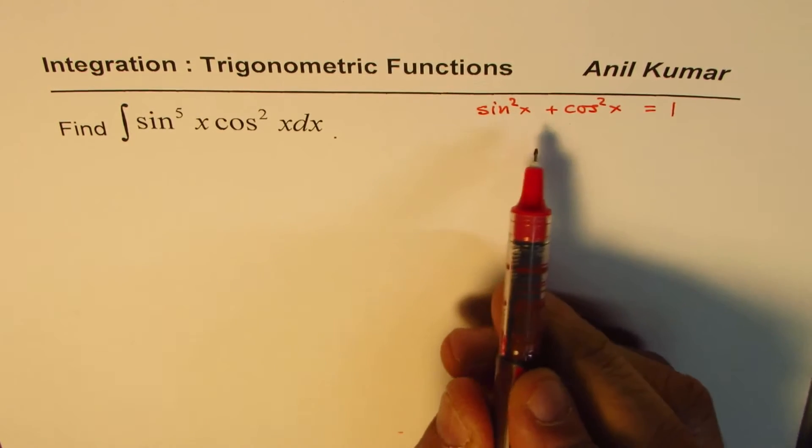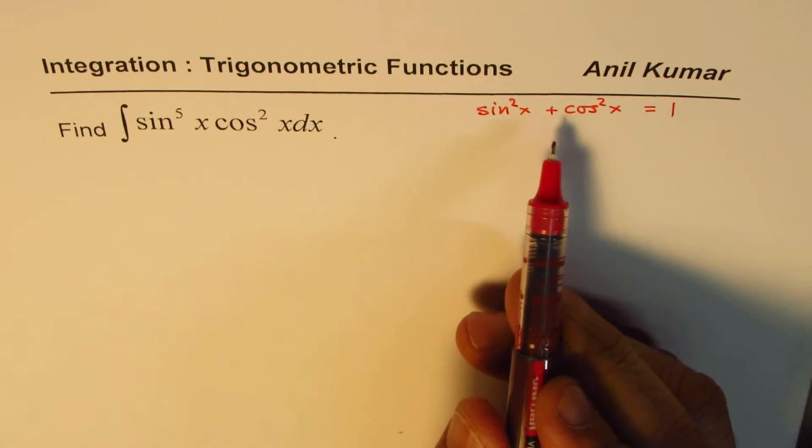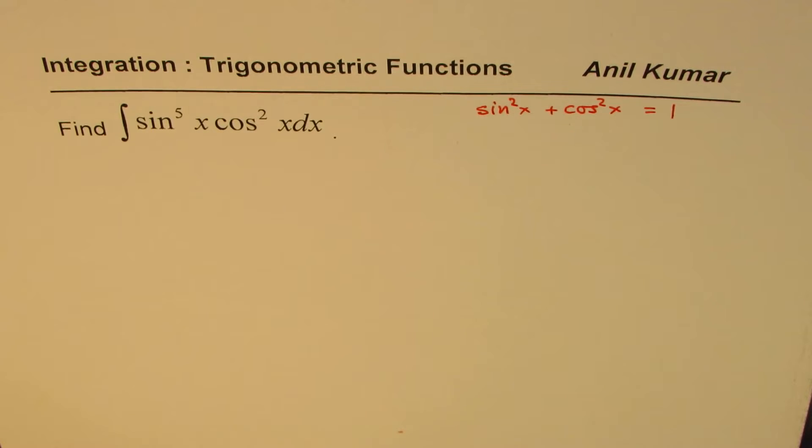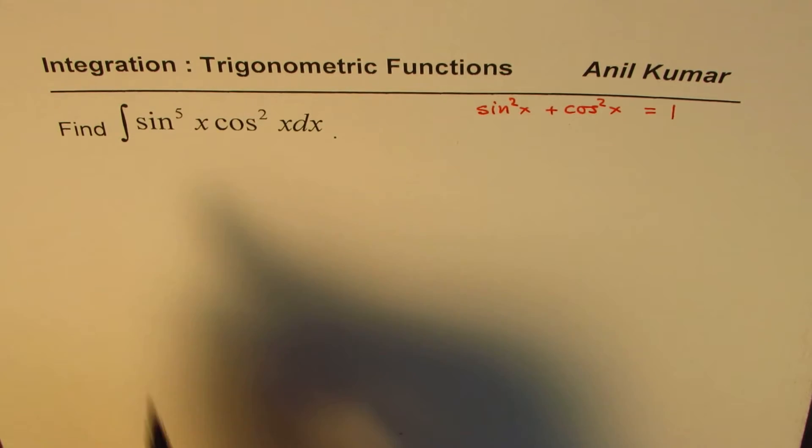So in this relation, we can work with the squares, but when we have odd powers, then it becomes difficult. So what we can do in such cases is that we can keep the odd power aside.